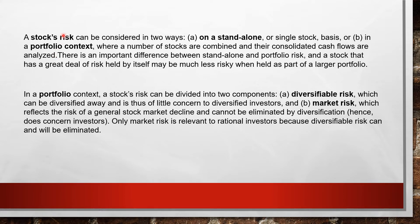All business assets are expected to produce cash flows, and the riskiness of an asset is based on the riskiness of its cash flows. The riskier the cash flows, the riskier the asset. If the cash flow of our asset goes up and down inconsistently, it is much riskier than a more stable or consistent asset. Assets include financial assets like stocks and bonds, as well as trucks, machines, or business segments.